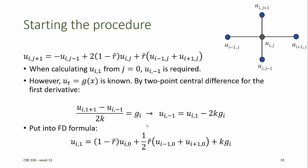However, special care must be taken when starting the procedure. When calculating the first row from the 0th row, we require knowledge about all the values of u in the minus 1th row. But the minus 1th row represents the values of u before time 0, and we don't have information about what happens before time 0.